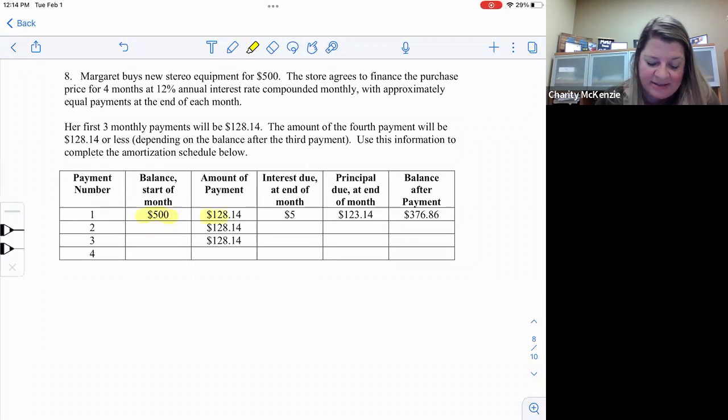So how are we going to figure this out? So when we start out, the balance is the full $500. And then the amount we pay is going to be the 128 for the three years. And the interest due at the end of the month is $5. Where did they say that? The interest due at the end of the month. No, you have to figure that out each time. They just filled out the first one. And then this much goes to principal and this much goes to the balance after your first payment.